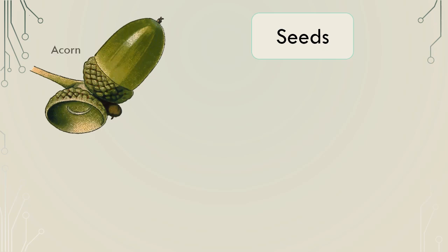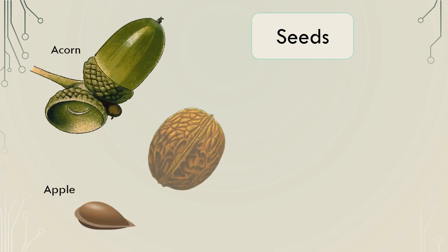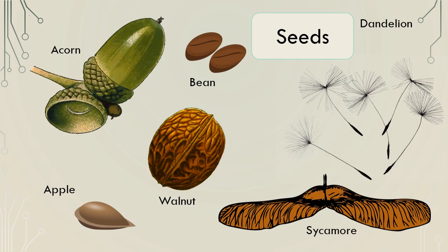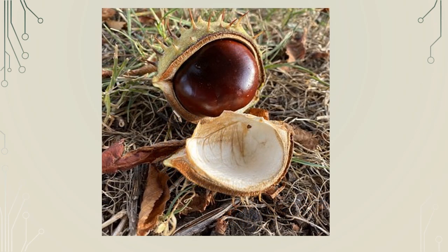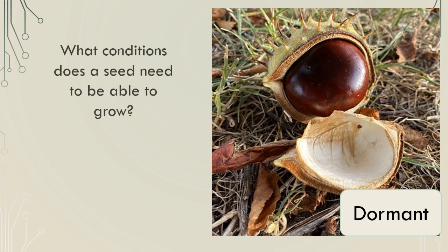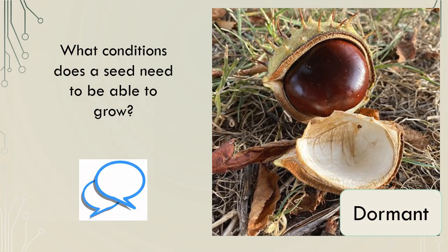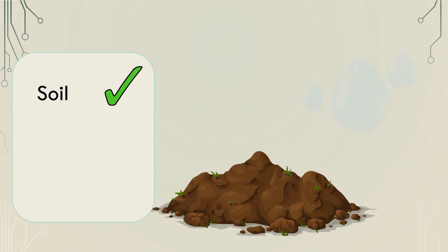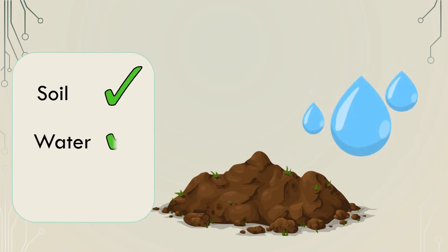Many plants grow from seeds. Seeds come in all different shapes and sizes. Seeds are dormant until they are placed in the right conditions. What are the right conditions for a seed to be able to grow? Most plants need soil for nutrients, water so they do not dry out, and sunlight for energy.